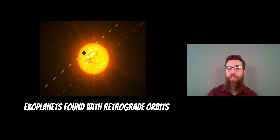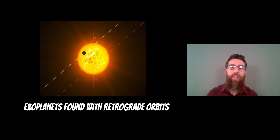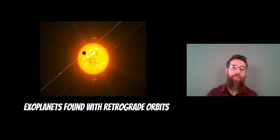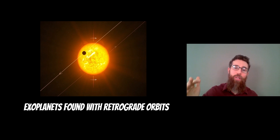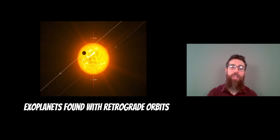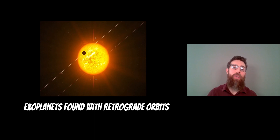Captured exoplanets are also thought to have been found around other stars — exoplanets on retrograde orbits. One scenario for an orbit that's retrograde compared to the prograde direction in which planets would normally form is capture. There is another scenario — a scattering event where two planets got close during formation and scattered each other, inclining the orbit significantly. So it's not just captured objects that could account for unusual retrograde orbits, but capture is one process. There are hints that some currently known exoplanets could already be captured rogue planets.